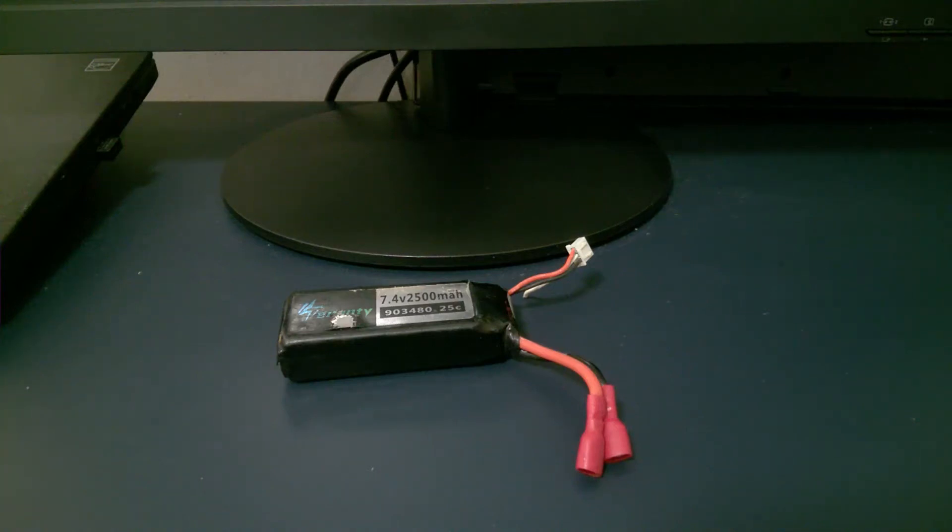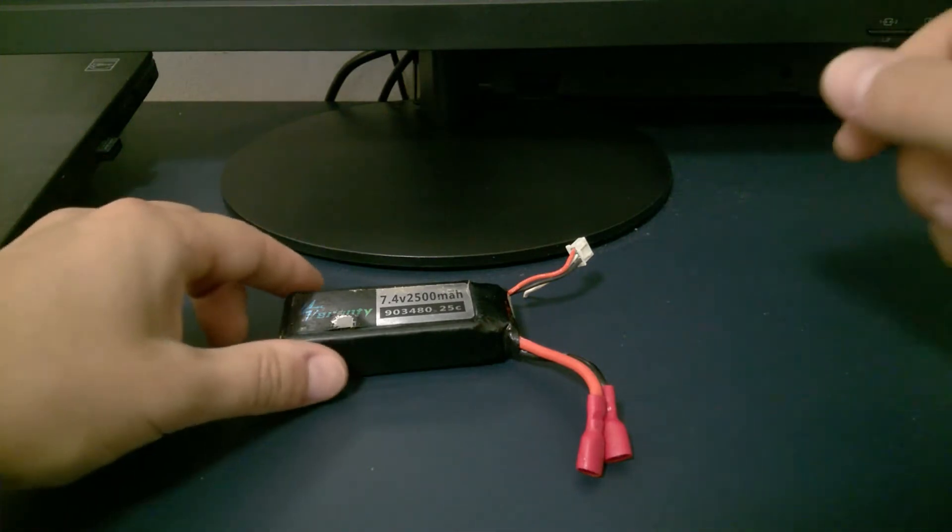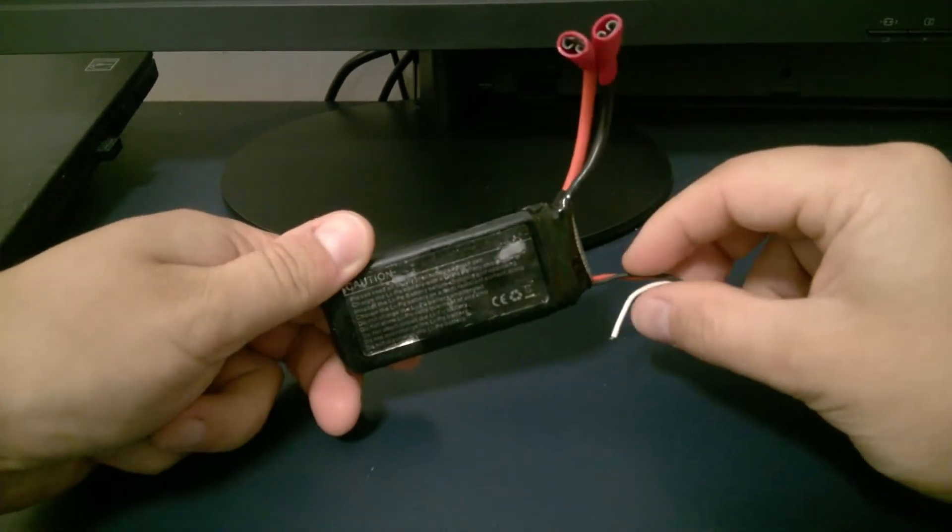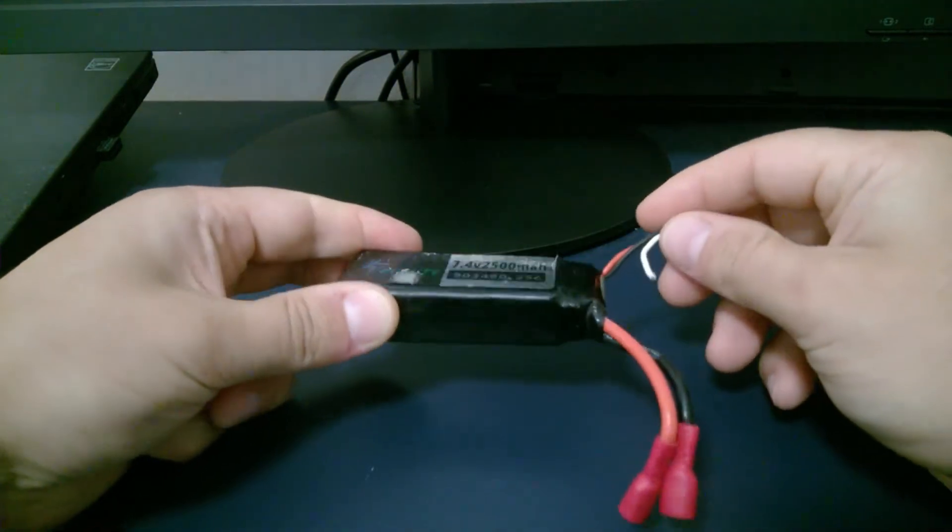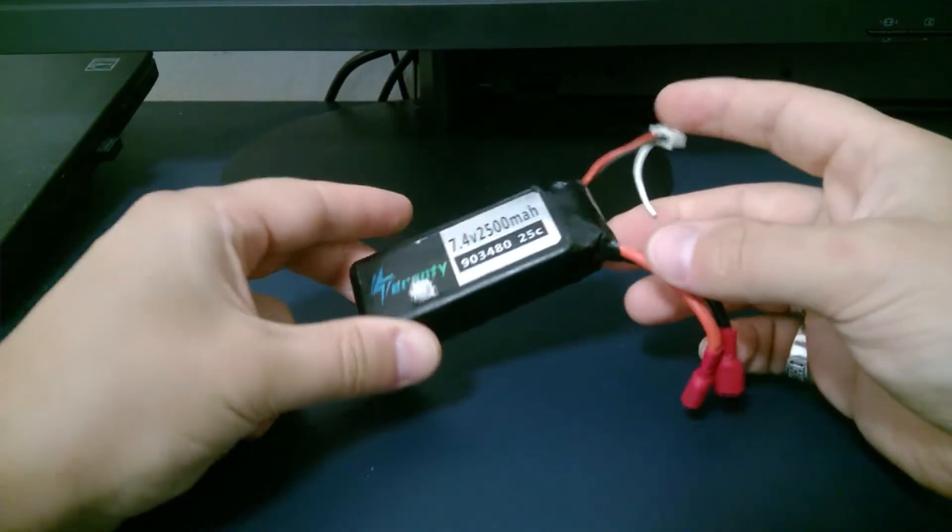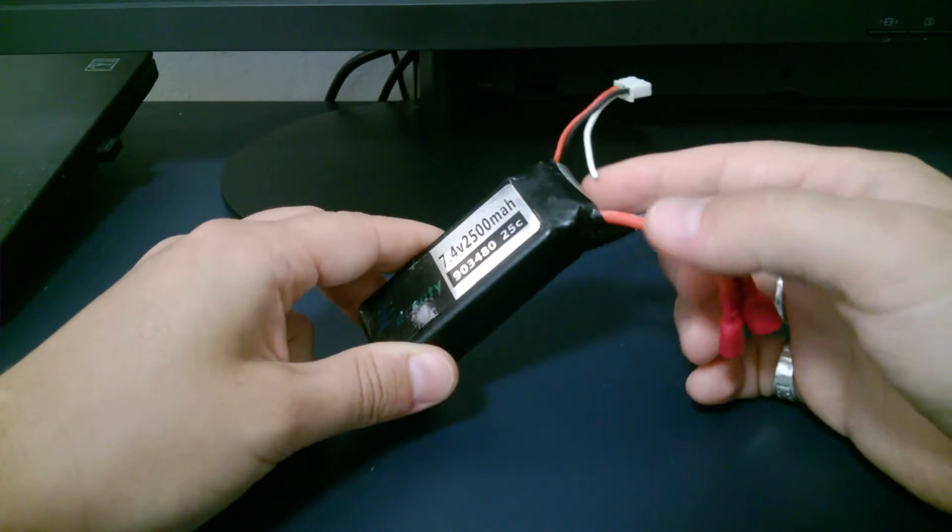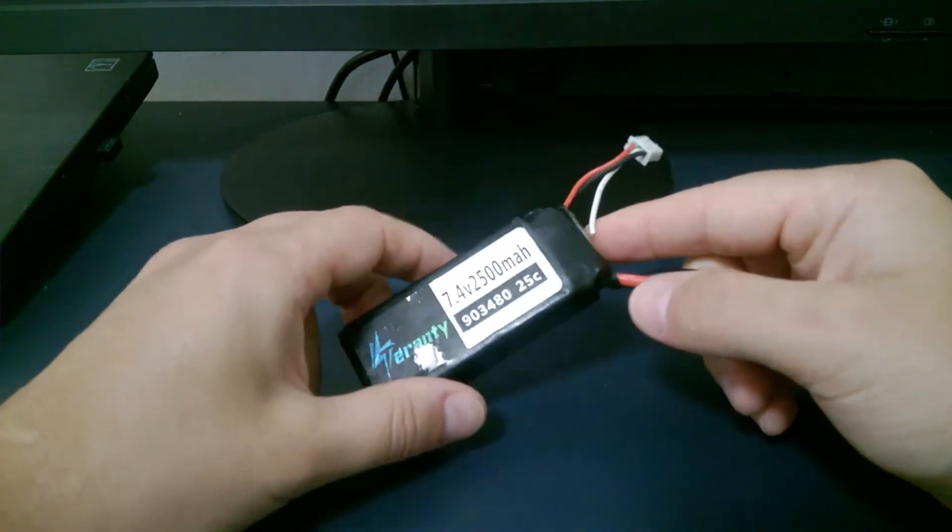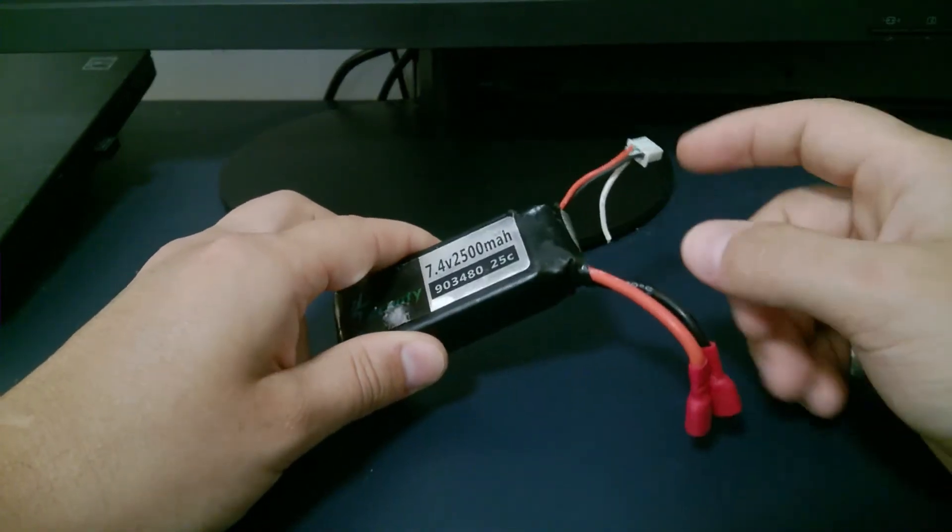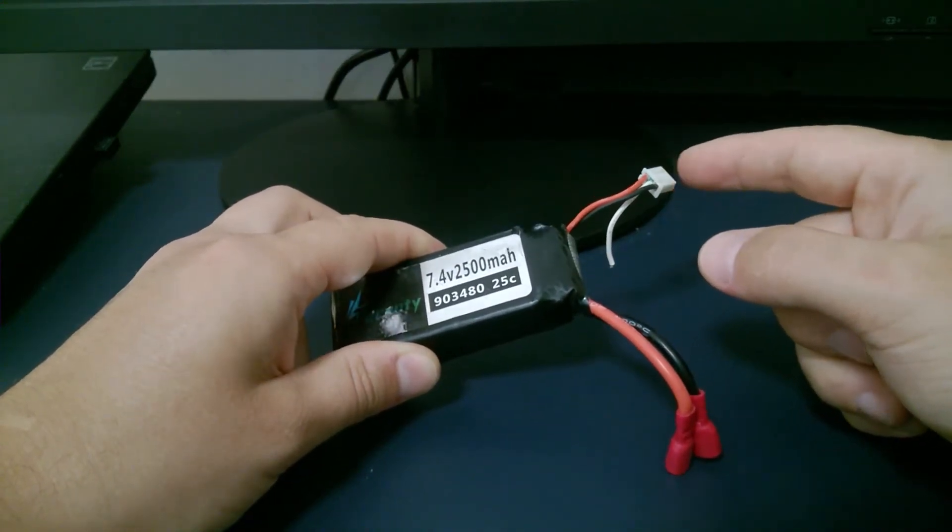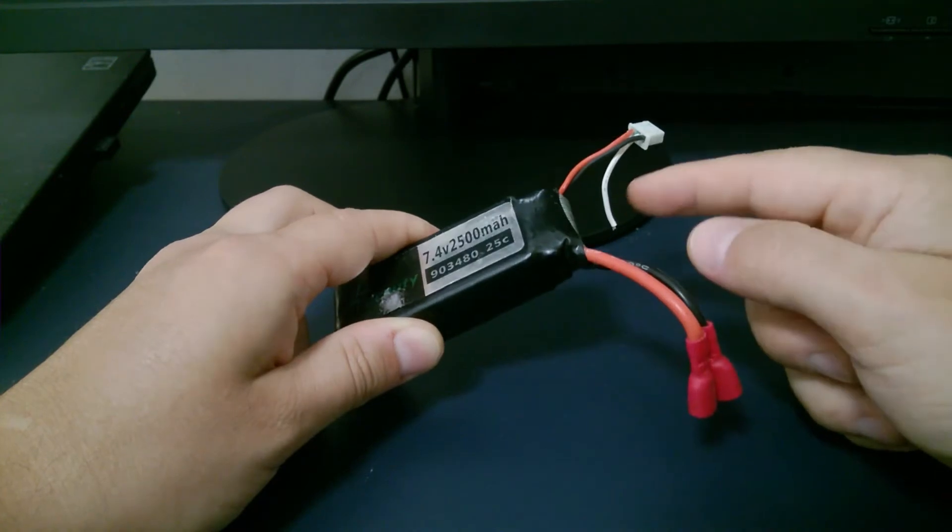Hello, today I'm going to fix my LiPo battery. One of the cables just got ripped off. This is a white cable which, according to what I have read, goes to a thermostat and helps to gauge temperature of the battery when it's charging.